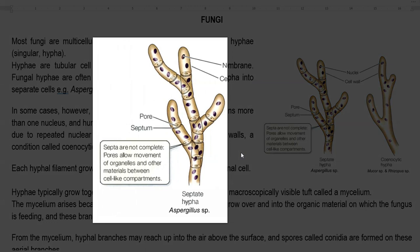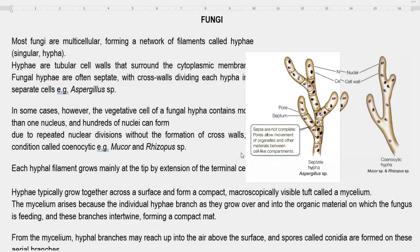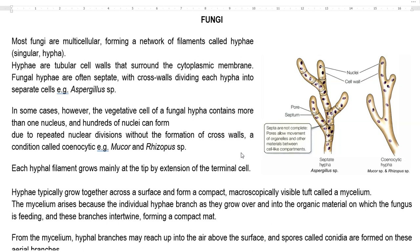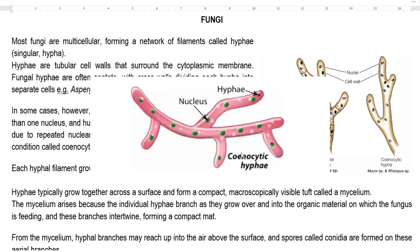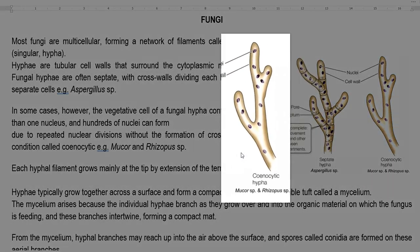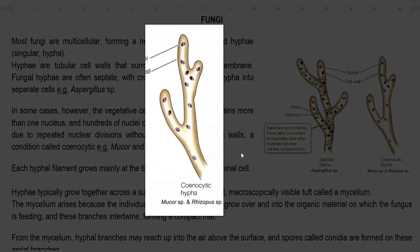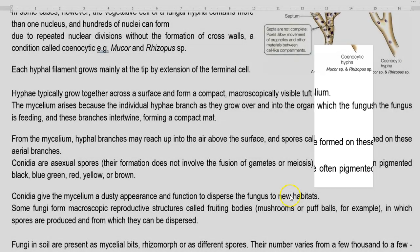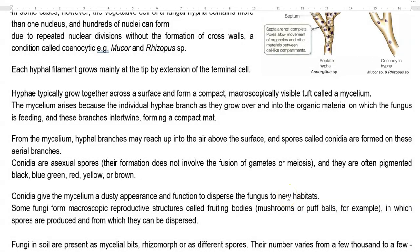An example of septate hyphae is Aspergillus species. There is also another kind of hyphal filament that contains more than one nucleus — hundreds of nuclei formed due to repeated nuclear division. These nuclei are distributed throughout the mycelium without forming cross septa, and this condition is referred to as a coenocytic or non-septate condition. An example of non-septate hyphae is Mucor and Rhizopus.